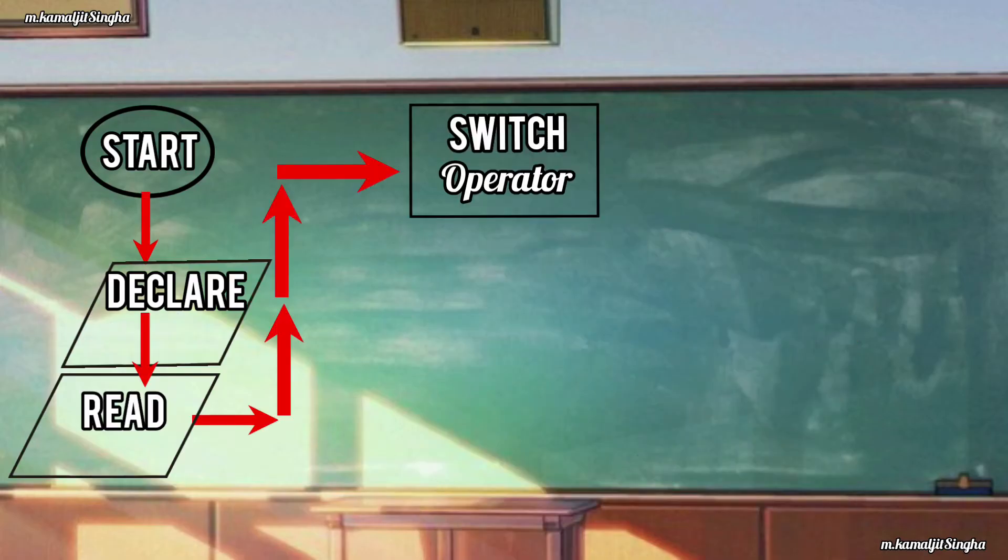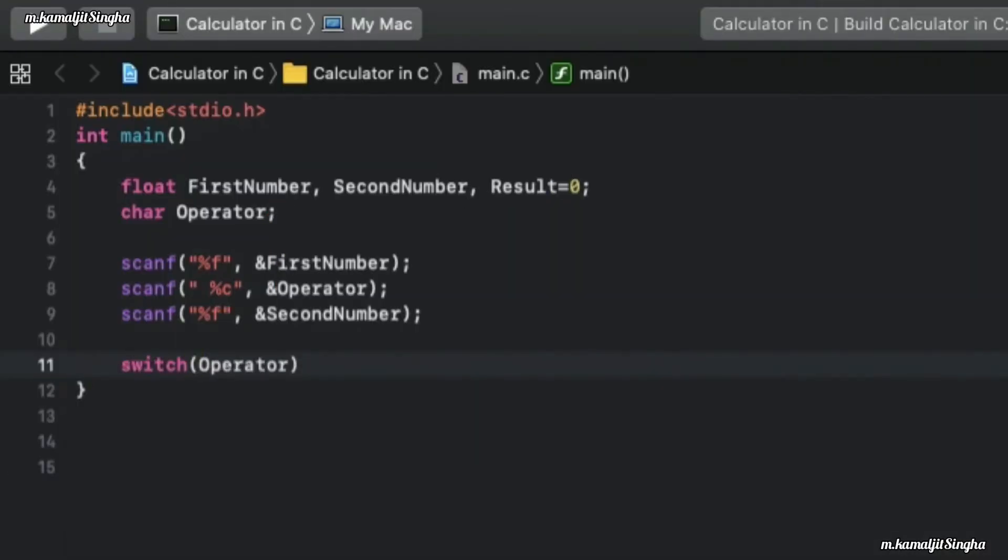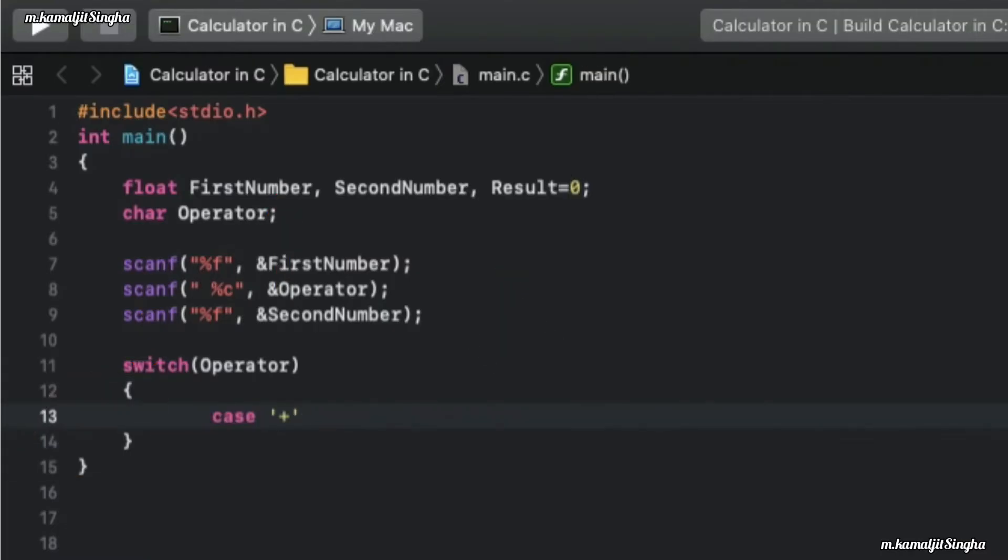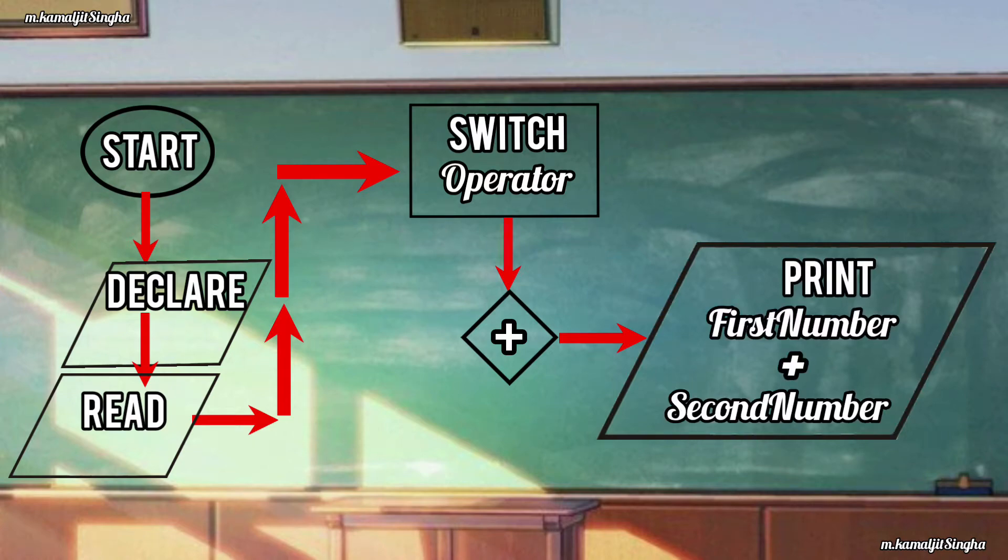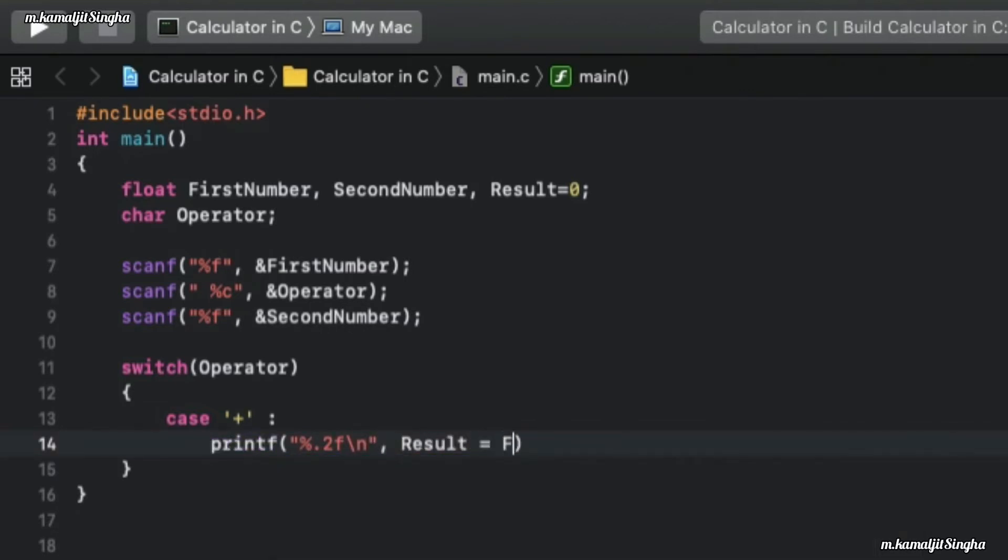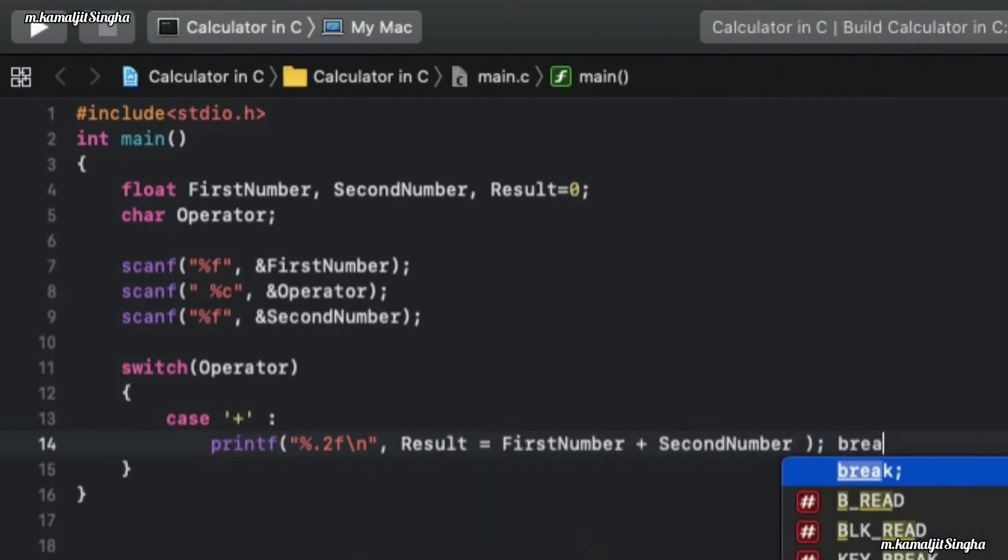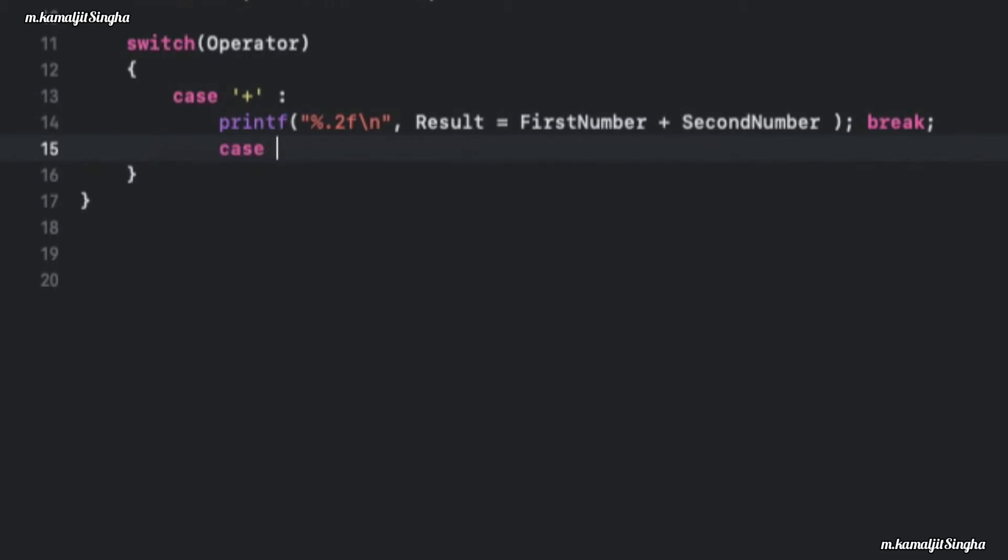Now switch operator. If the operator is plus sign, print the result of first number plus second number, then break. If the operator is minus sign, print the result of first number minus second number.